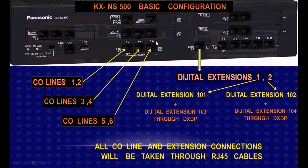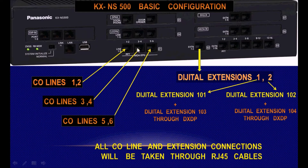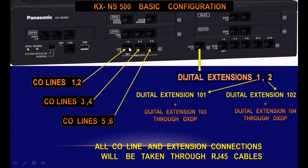The main unit comes with six CO line and RP CO line interfaces initially equipped. These three ports each provide an interface for two CO lines, or two external music on hold sources, or two external pager connections. Each port individually can be programmed for CO line, music on hold, or pager.